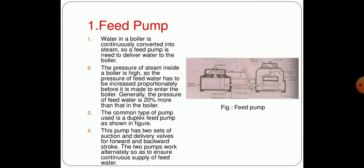Now we can see all these functions one by one. First one is feed pump. Water in the boiler is continuously converted into steam, so the feed pump is needed to drive water to the boiler. The pressure of steam inside the boiler is high, so the pressure of the feed water has to be increased proportionally before it enters into the boiler. Generally the pressure of feed water is 20% more as compared to the boiler pressure. A common type of pump used is the duplex feed pump as shown in figure. These pumps have two seats on the suction and delivery valves for forward and backward strokes. The two pumps work alternately so as to ensure continuous supply of feed water.